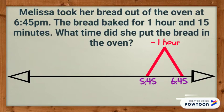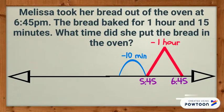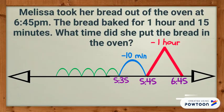Now I will subtract groups of 10 minutes. I will create one hill to subtract the 10 within the 15 minutes. 5:45 minus 10 minutes is 5:35. Now it is time to subtract the 1 minute rocks. Since these are so tiny, I will only record the new time at the end. 5:35 minus 5 minutes equals 5:30.